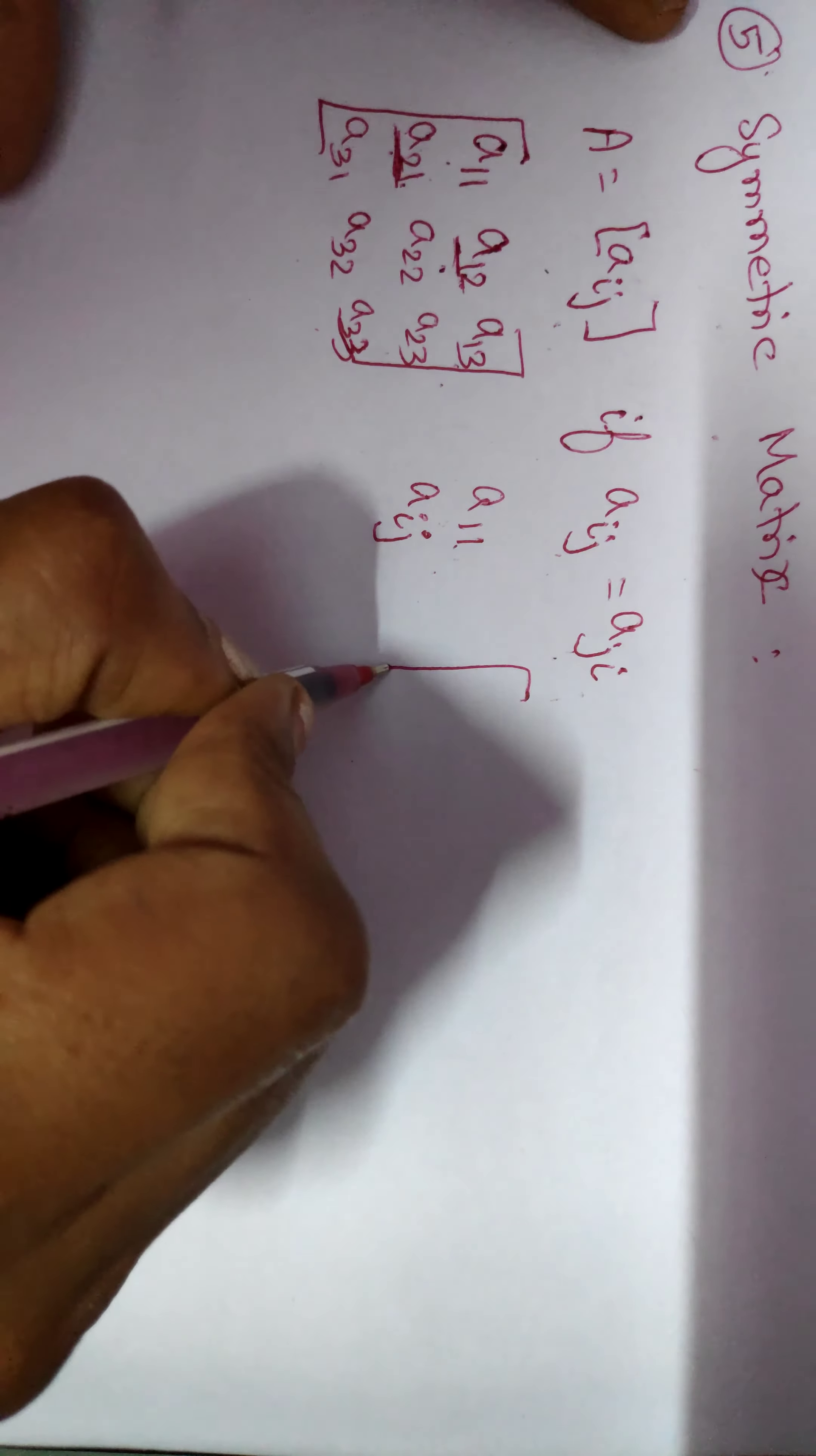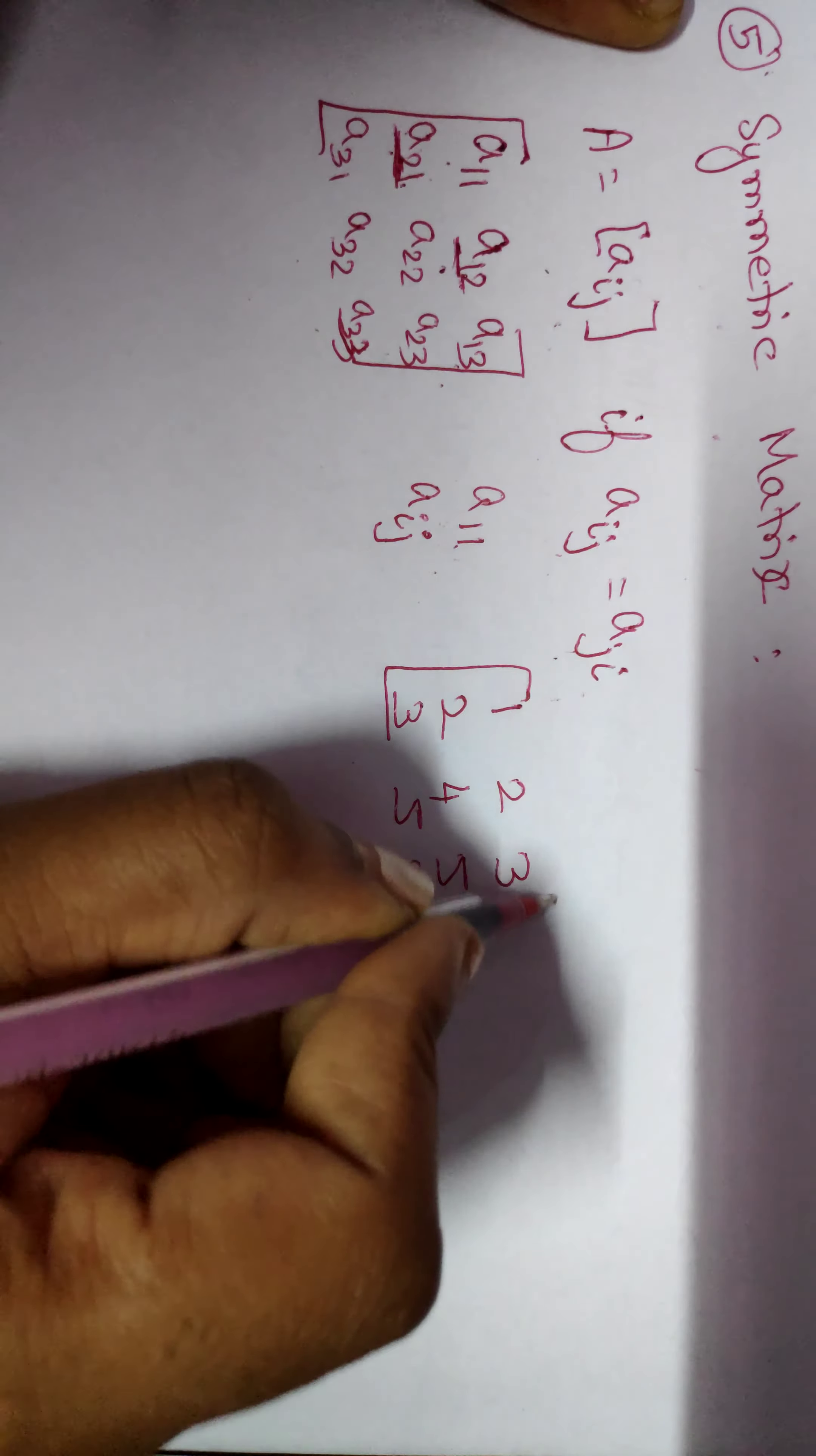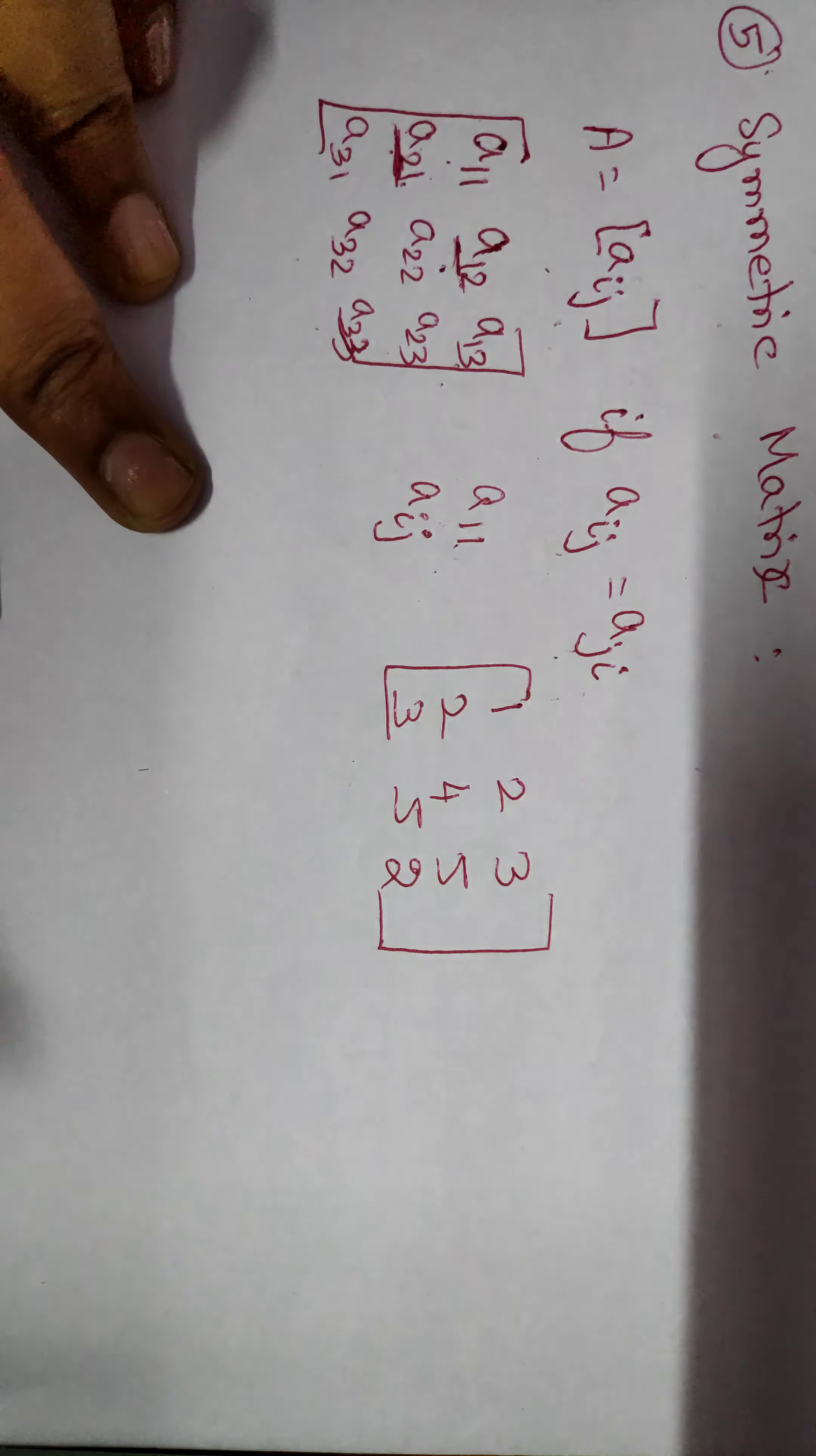Now, we will see the example problem here: 1, 2, 3, 2, 4, 5, 3, 5, 2. Here, it is a symmetric matrix. How are we telling it is a symmetric matrix here?